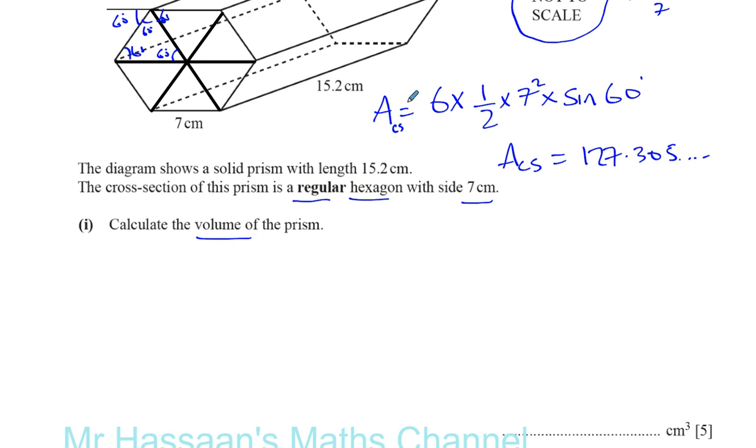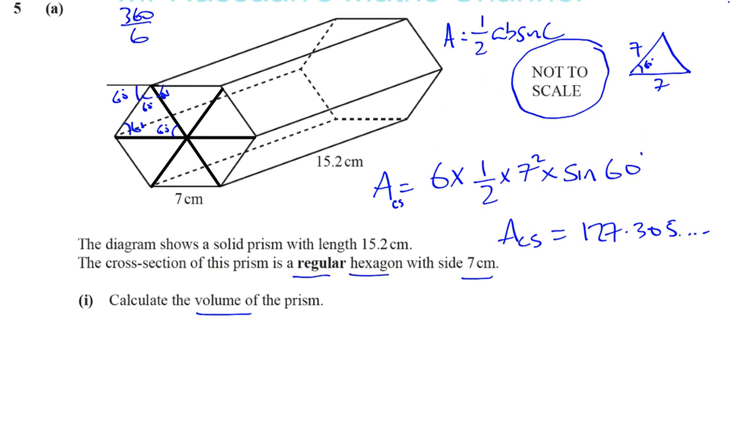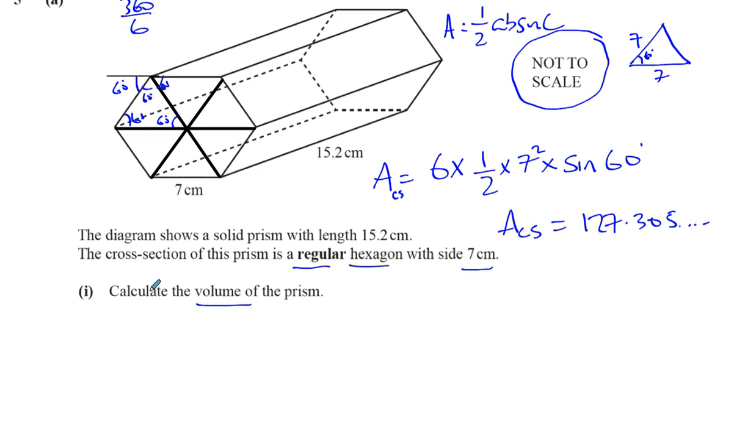I'm showing the steps here so we can see the diagram in front of our faces. So the volume of the prism therefore is going to be given by this area, which is 127.305 dot dot dot, times how long it is, which is 15.2.